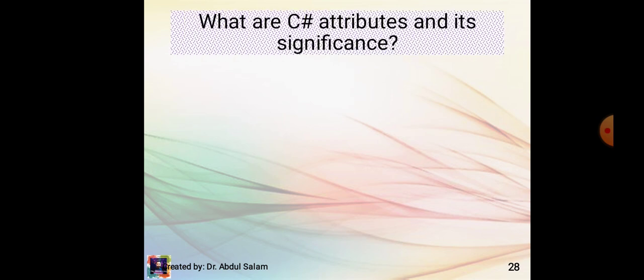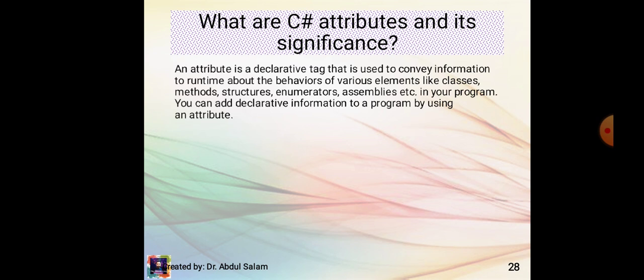What are C# attributes and their significance? An attribute is a declarative tag used to convey information to the runtime about the behaviors of various elements like classes, methods, structures, enumerators, assemblies, etc. in a program. You can add declarative information to a program by using an attribute.